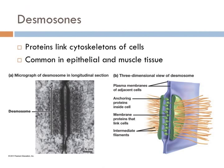Desmosomes are cell structures specialized for cell-to-cell adhesion. A type of junctional complex, they are localized spot-like adhesion randomly arranged on the lateral sides of plasma membranes. Desmosomes help to resist shearing forces that are found in epithelial cells. Desmosomes are also found in muscle tissue, where they bind muscle cells together.